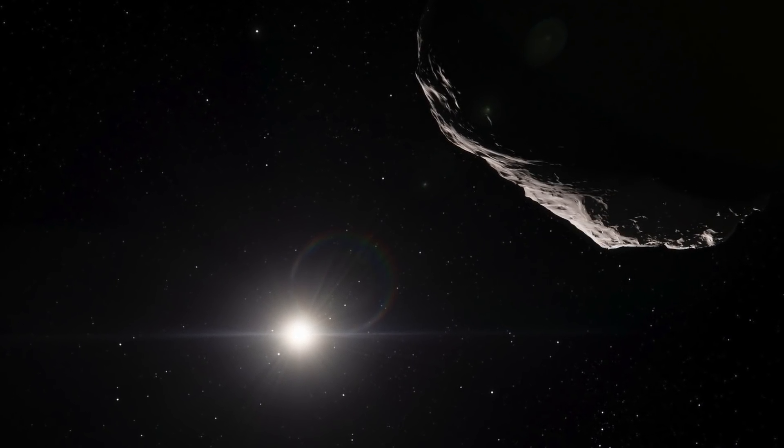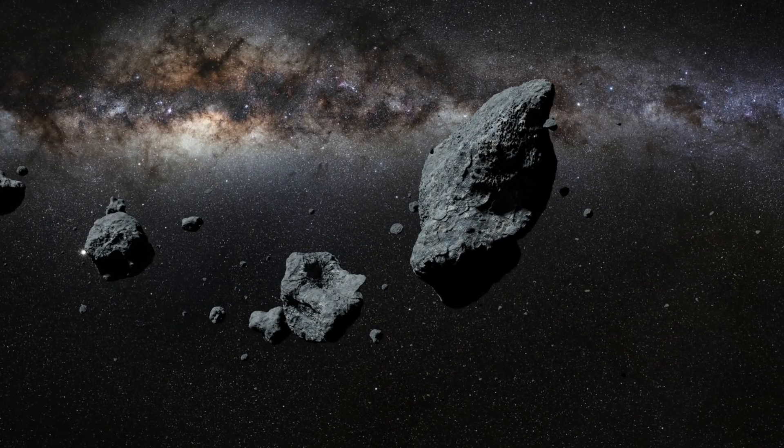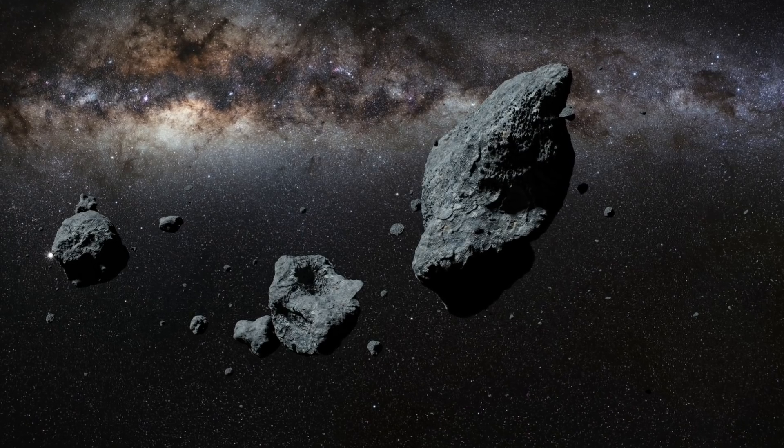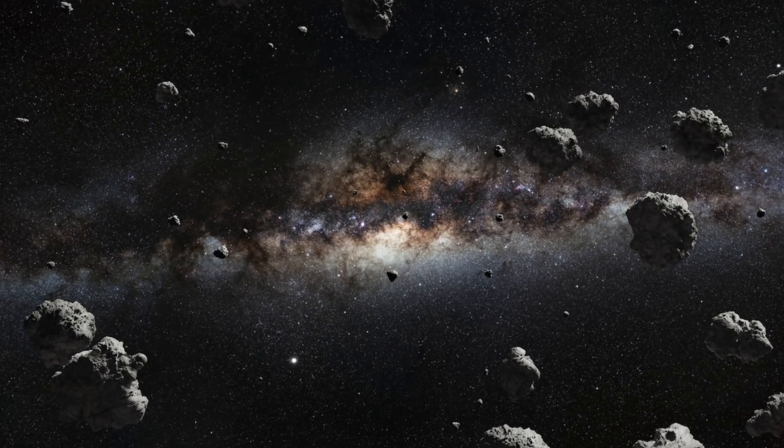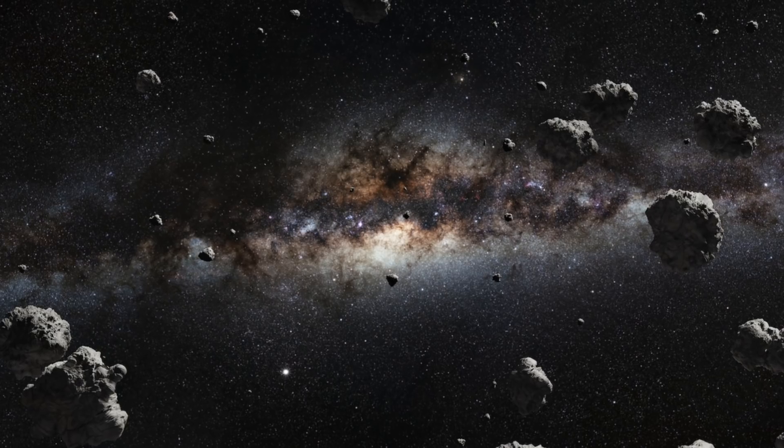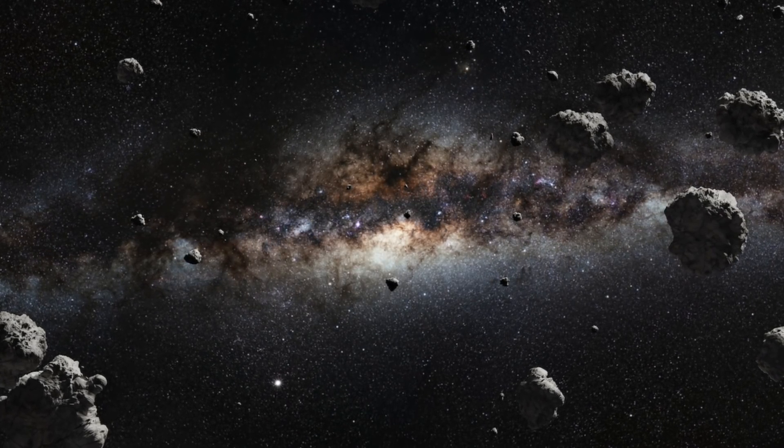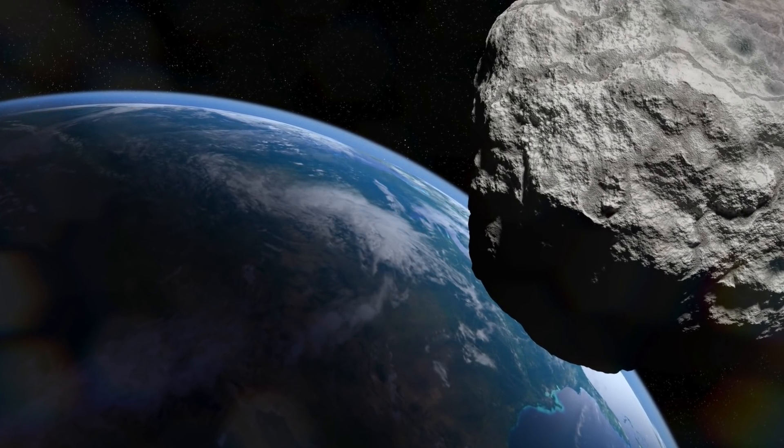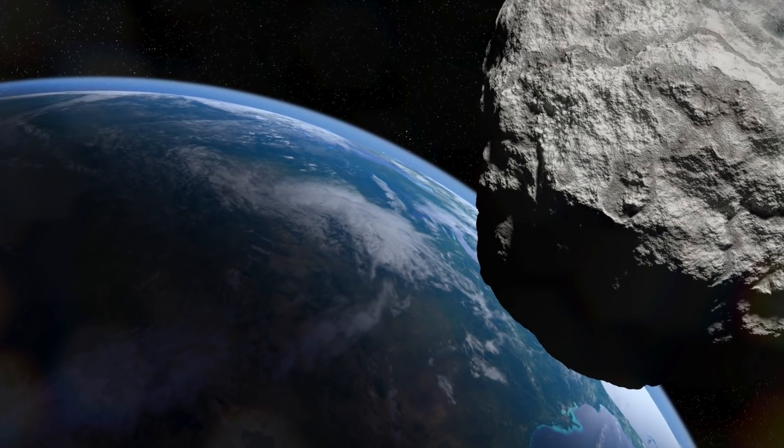A study only recently published announced that researchers had proven the asteroid's existence and also stated that the rock will be following Earth's orbit for at least another several thousand years. A team of astronomers from the Institute of Cosmos Sciences of the University of Barcelona proudly declared their discovery of 2020 XL-5, the second Earth trojan ever confirmed after 10 years of tireless searching. 2020 XL-5 is believed to be around 0.7 miles in diameter. For context, the first Earth trojan, 2010 TK7, was 0.2 miles in diameter.